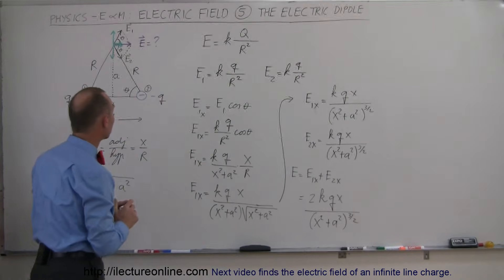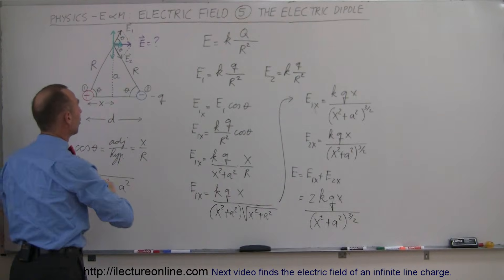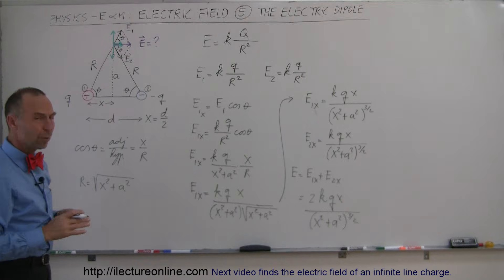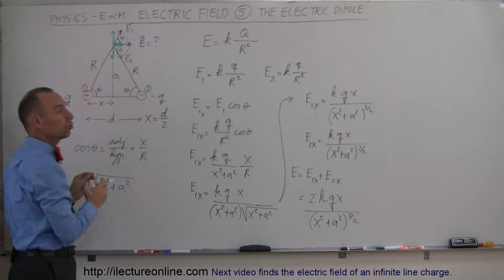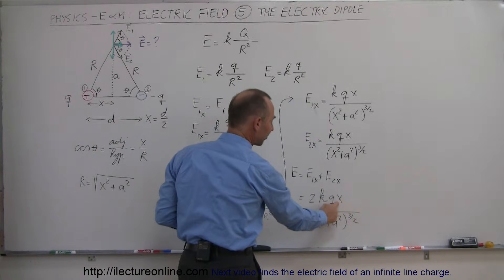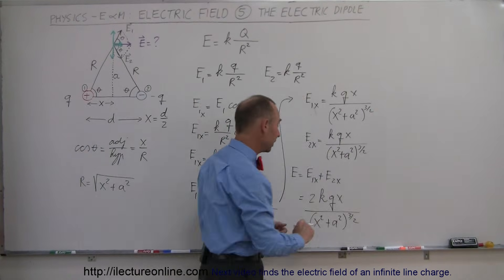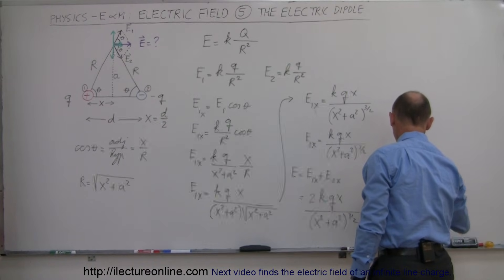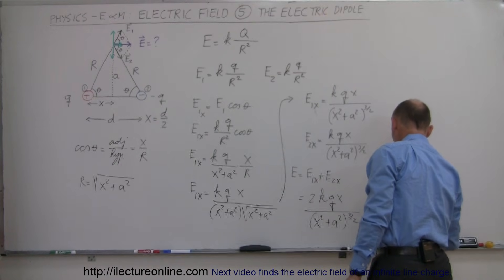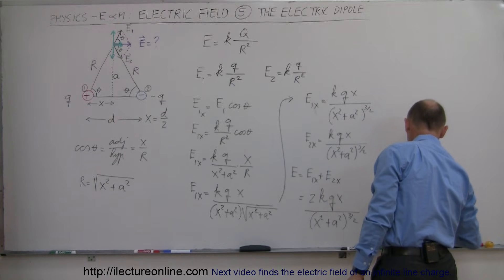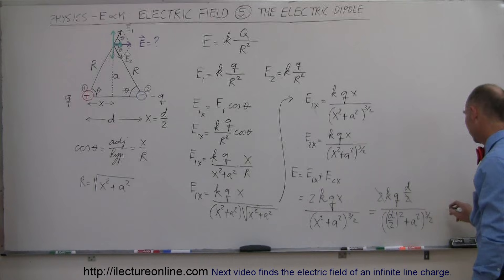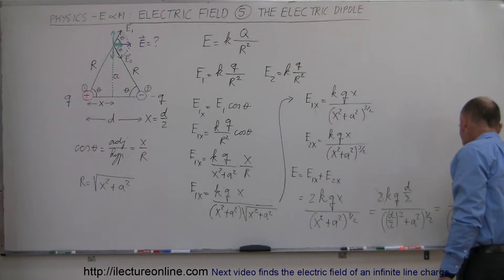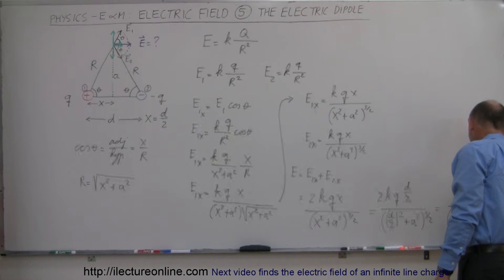Going back to what x equals — x is half the distance between the two charges, so x = d/2. When working with dipoles, we want to express the answer in terms of d, the full separation. Substituting x = d/2, the final answer becomes E = kQd / [(d/2)² + a²]^(3/2).